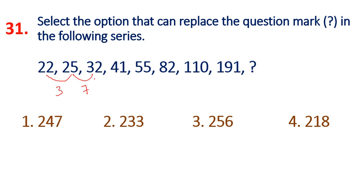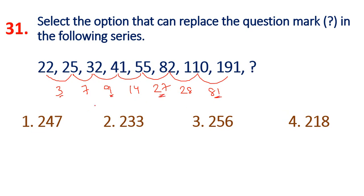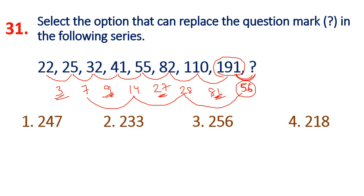Let's find the differences: 25-22=3, 32-25=7, 41-32=9, 55-41=14, 82-55=27, 110-82=28. Next difference should be 56. So 191 plus 56 equals 247. Option 1 is the answer: 247.